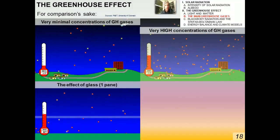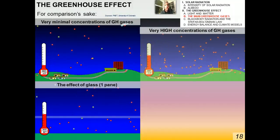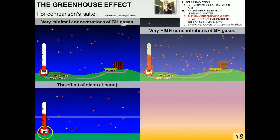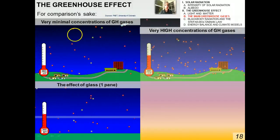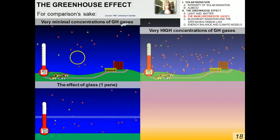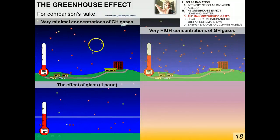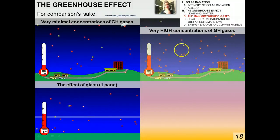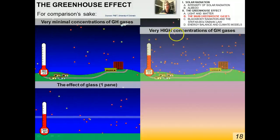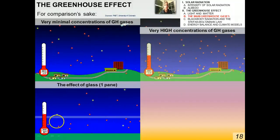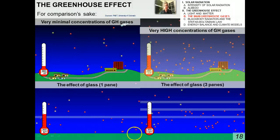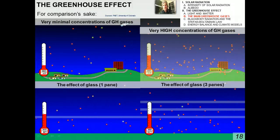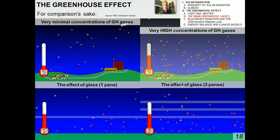I alluded earlier to how a glass greenhouse is like the atmosphere. You can also play around with the effect of glass in this simulation. In the simulation, the incoming photons are ultraviolet or visible light photons, and the red ones are infrared photons being re-emitted by the Earth and in some cases re-radiated back down — you can see some bouncing around in the atmosphere. Look at the effect of even one pane of glass on the temperature — it's significantly hotter. Three panes of glass? Miserable. That's why it's so hot inside a greenhouse, especially when the sun is shining.